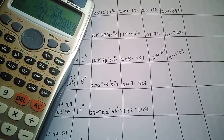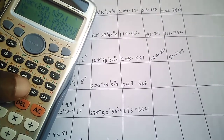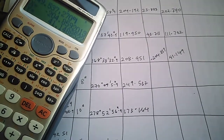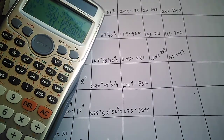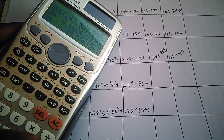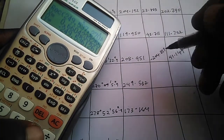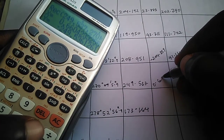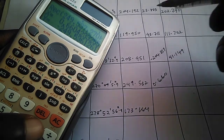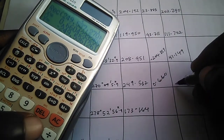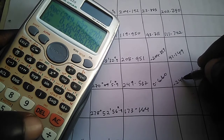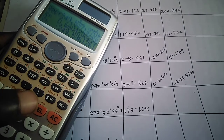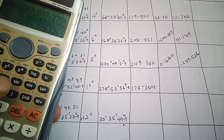We move to the next one. We have a distance of 249.537, comma, and the bearing is 279 degrees 5.9 seconds. We get a delta northing of 0.660 and a delta easting of negative 249.536.